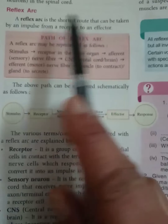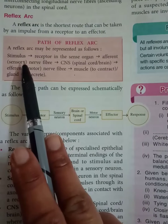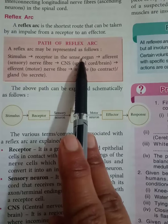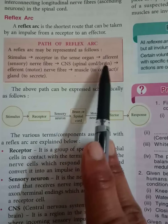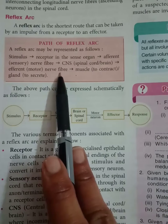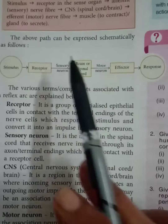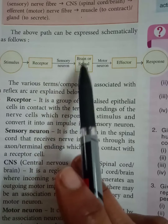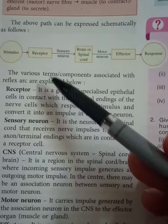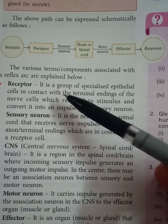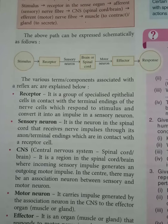The reflex arc is the shortest route that can be taken by an impulse from a receptor to an effector. The path of the reflex arc you must learn: stimulus → receptor in the sense organ → afferent or sensory nerve fiber → spinal cord or brain → efferent or motor nerve fiber → muscle to contract or gland to secrete → response. So the sequence is: stimulus, receptor, sensory neuron, brain or spinal cord, motor neuron, effector, and response. Various terms associated with the reflex arc will be explained in the last video. Thank you.